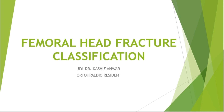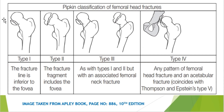Before going into the classification detail, let's have a brief look at the anatomy of the femoral head so we can understand it better. Here is our femoral head, this is the femoral neck, and this is the trochanteric region — the greater trochanter and the lesser trochanter.